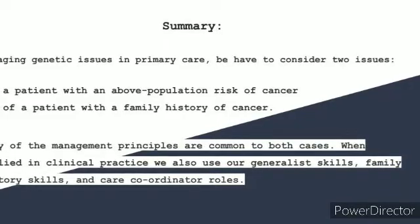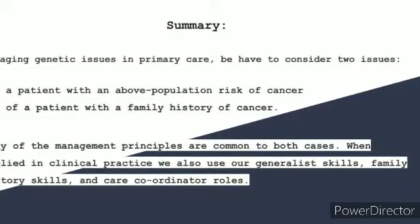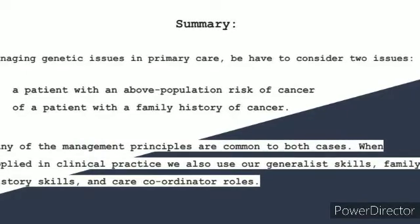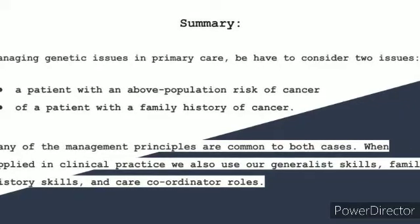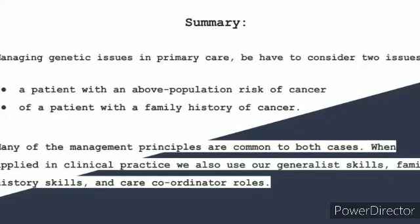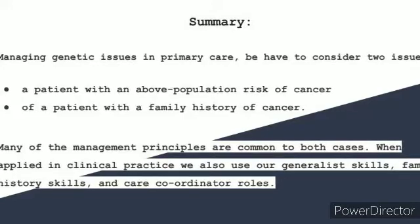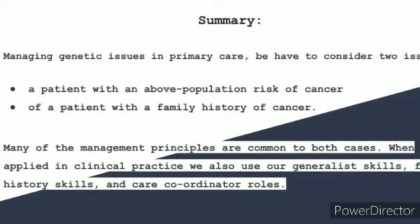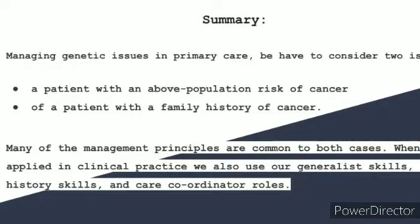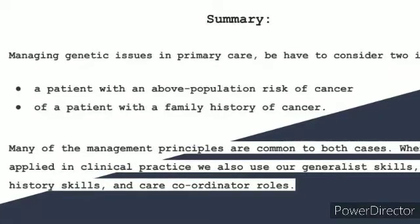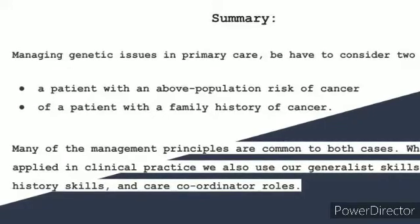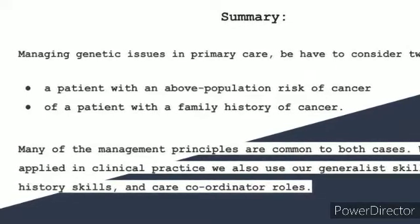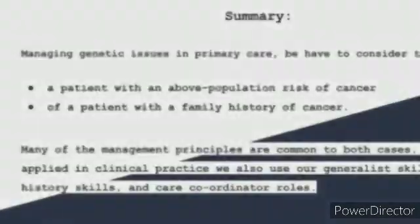To summarize, when managing genetic issues in primary care, we have to consider two types of patients. First, a patient with an above-population risk of cancer — for example, one whose work implies environmental factors very important to developing cancer. Second, the patient with a family history of cancer. Both are extremely important to consider when we make the medical report for the patient. Many management principles are common to both cases. In clinical practice, we also use our general skills — our considerations about what to do, what to ask, what tests to order, what questions to ask about the family, and other considerations with the medical team.